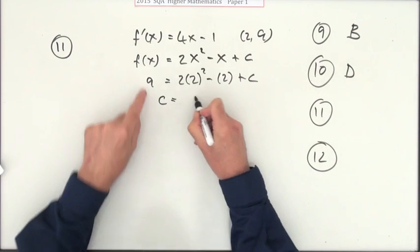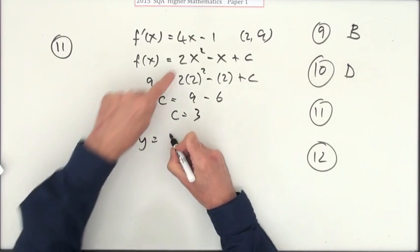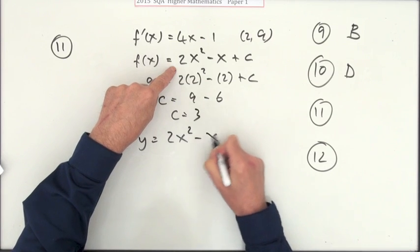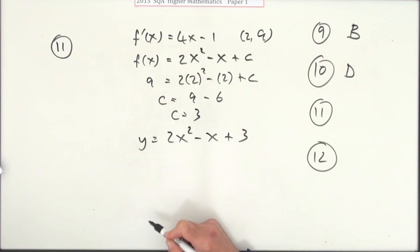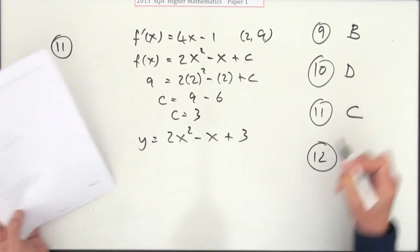So c will be the 9 take away that 6. C should be 3. So I should have 2x squared minus x plus 3. If it's there, 2x squared minus x plus 3 is C.